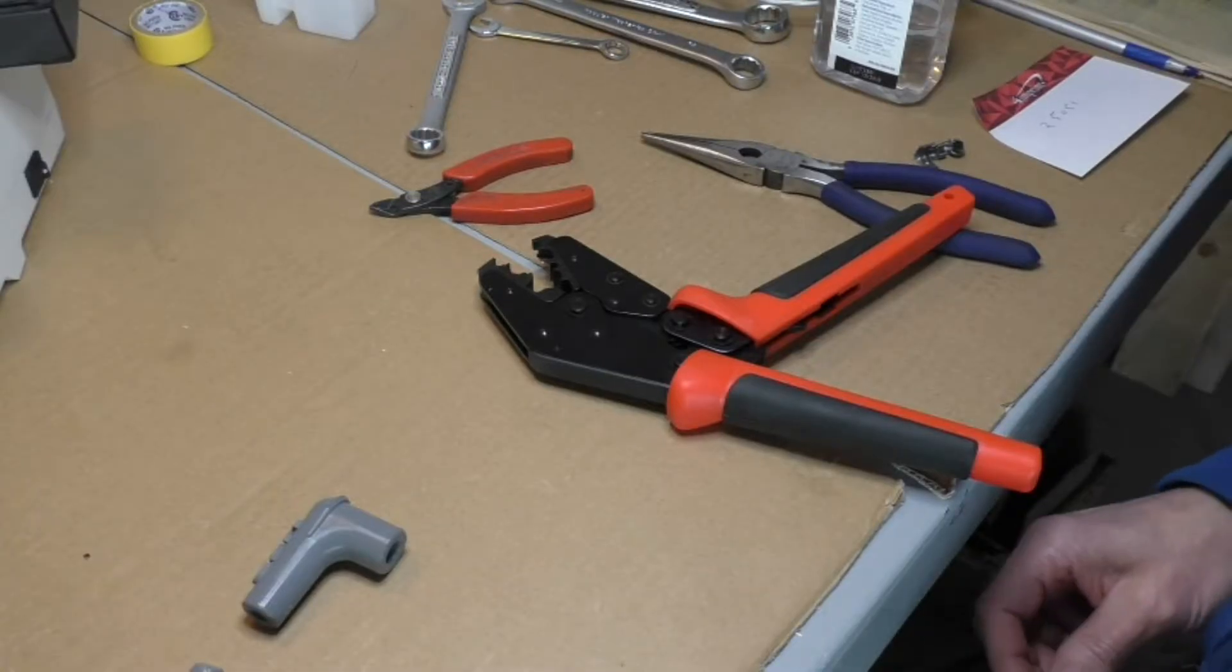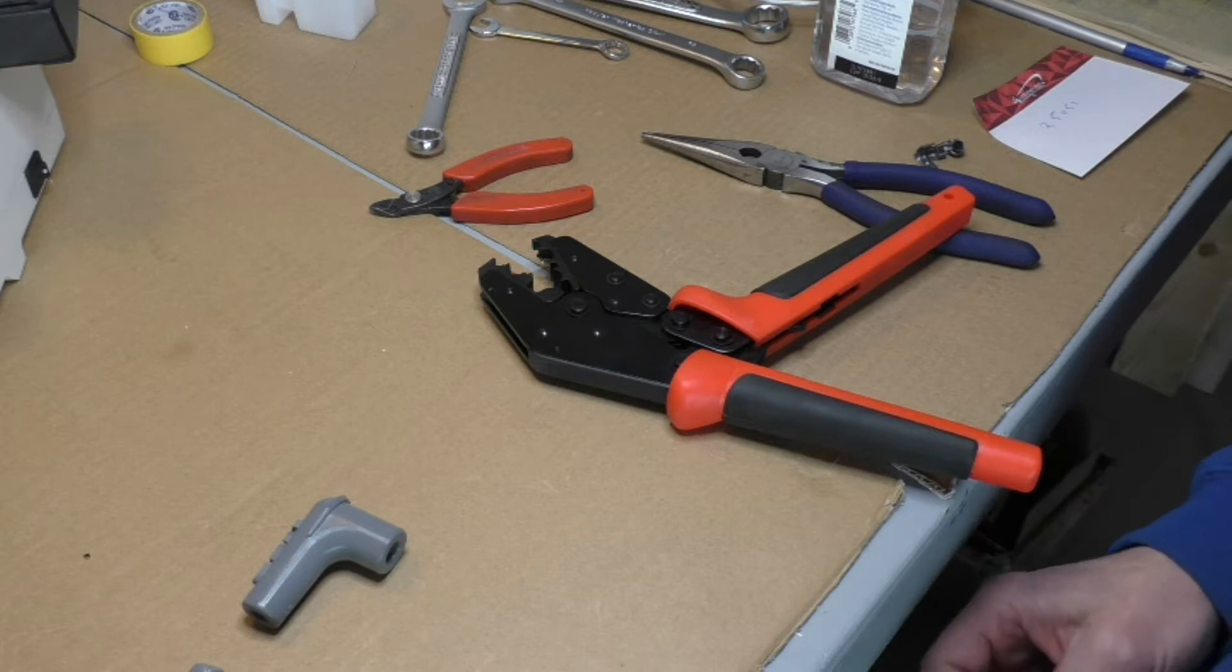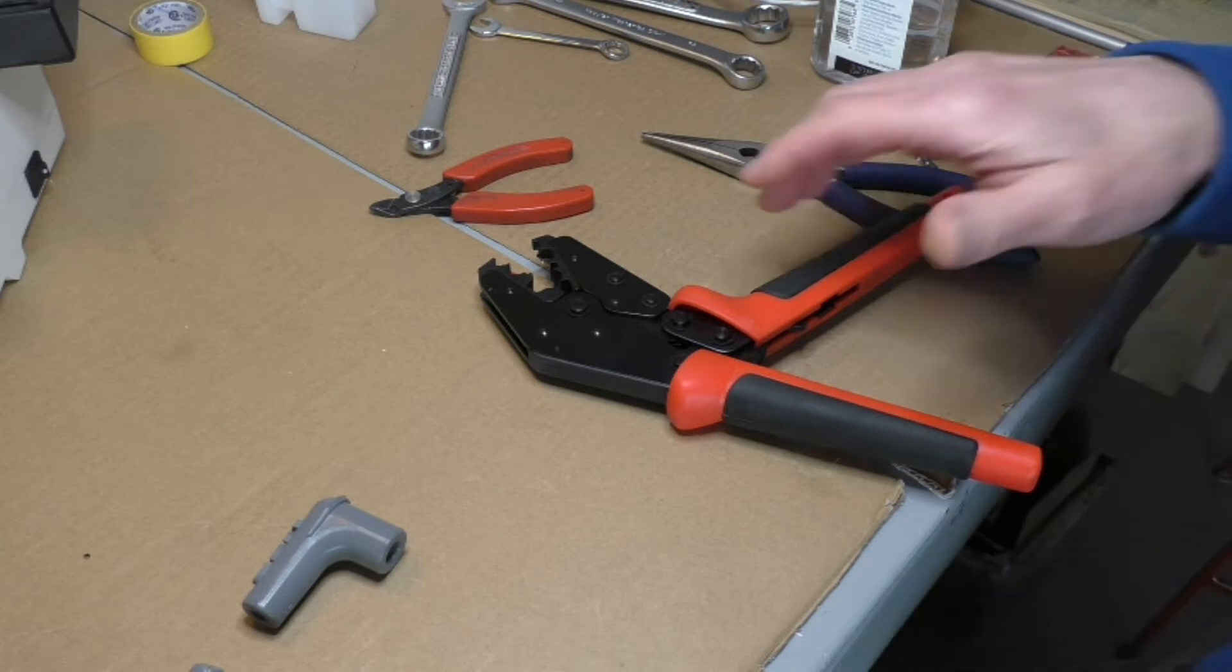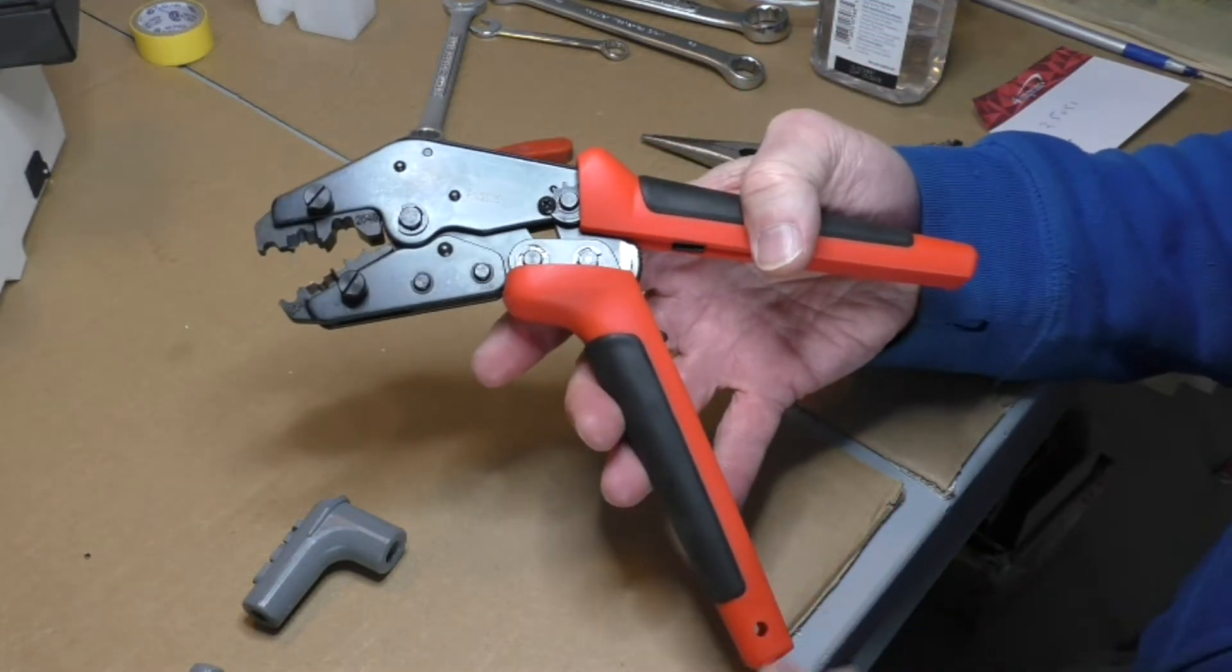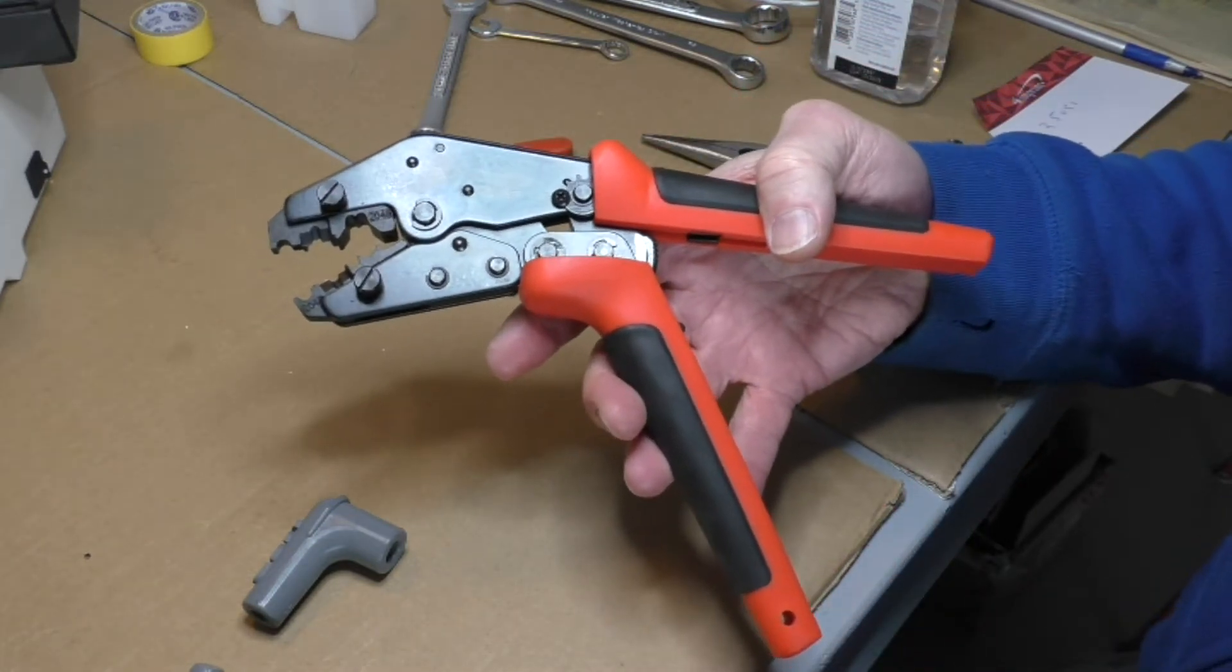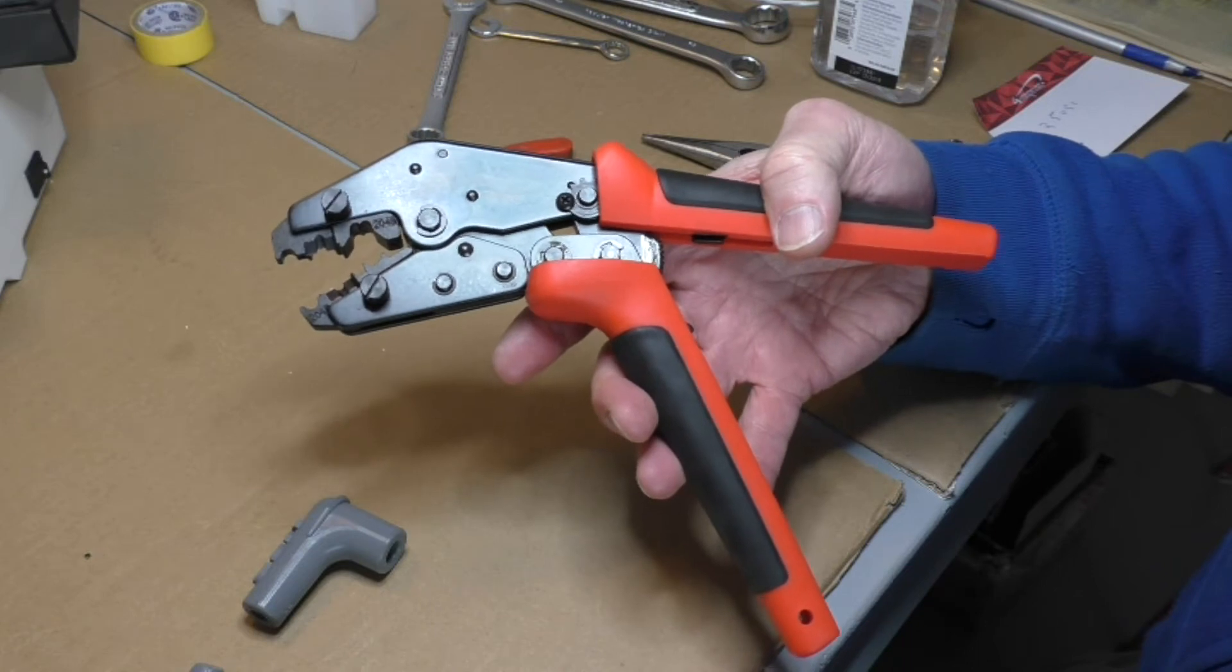Okay today we're just going to do a short video on how to put together your MSD spark plug wires. We're going to be using MSD tool 35051. This is a crimper and stripper tool specifically for this job.